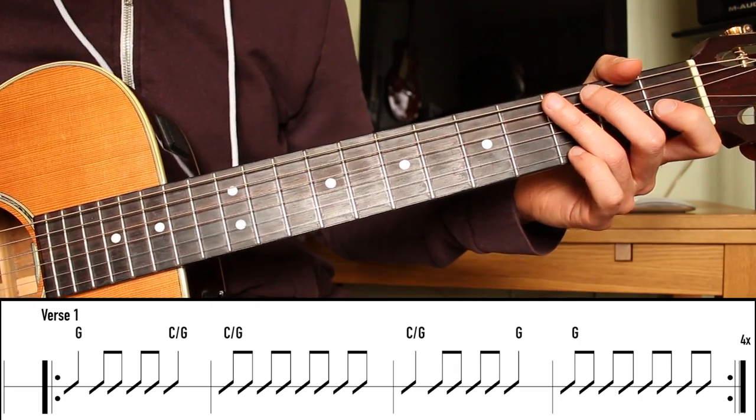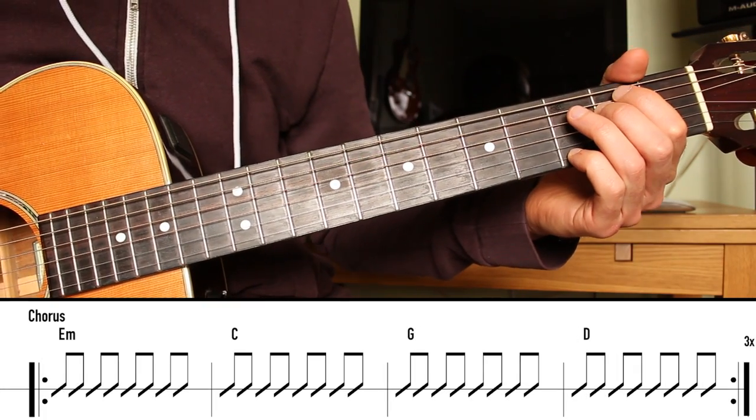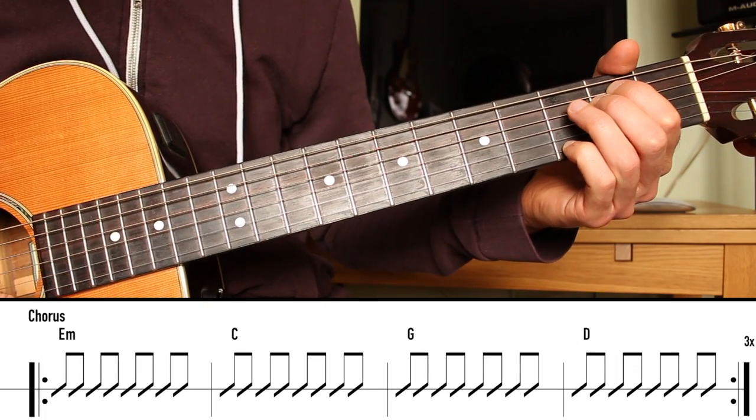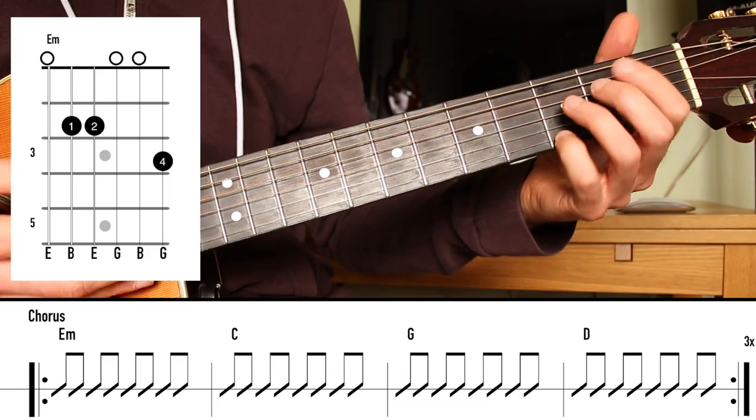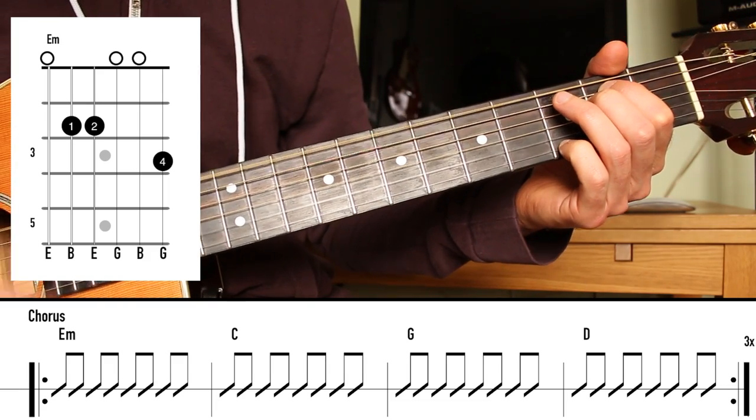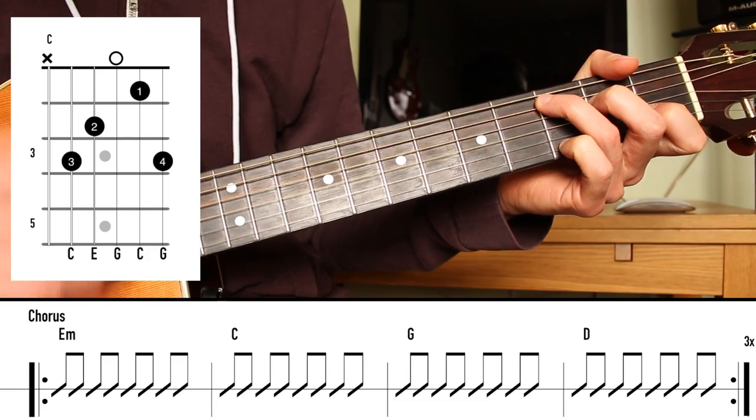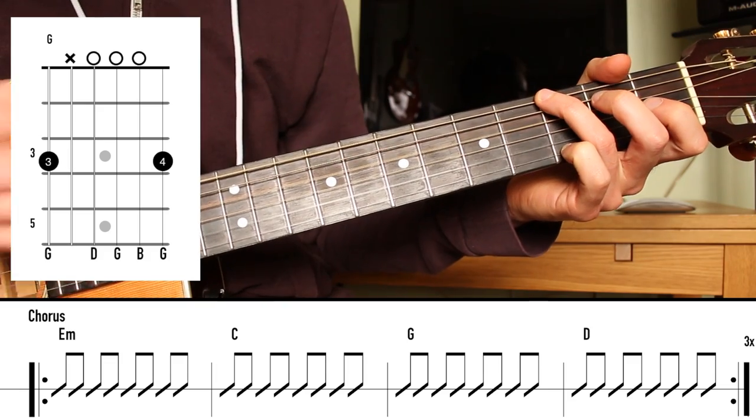As we hit the chorus at 47 seconds, we're going to be going down up 8th notes on an E minor chord. Pinky is up on the top, I think, for this one. And C with pinky on top. Then G. And D.